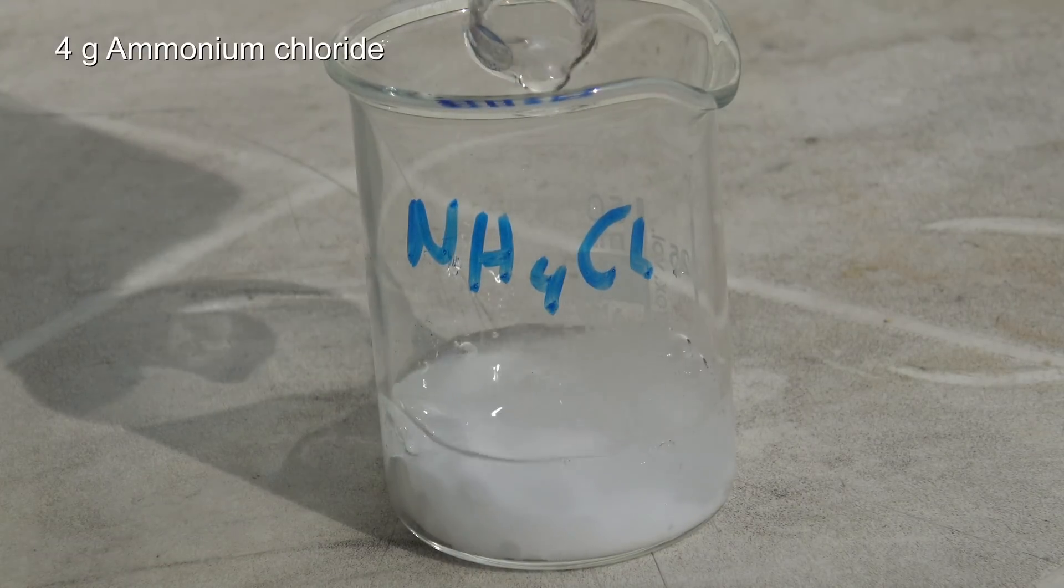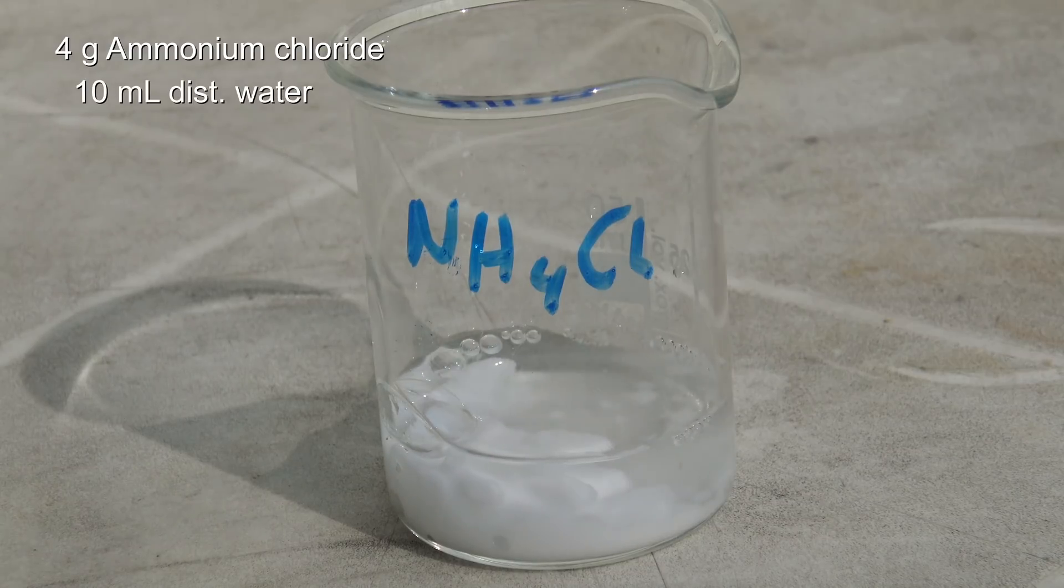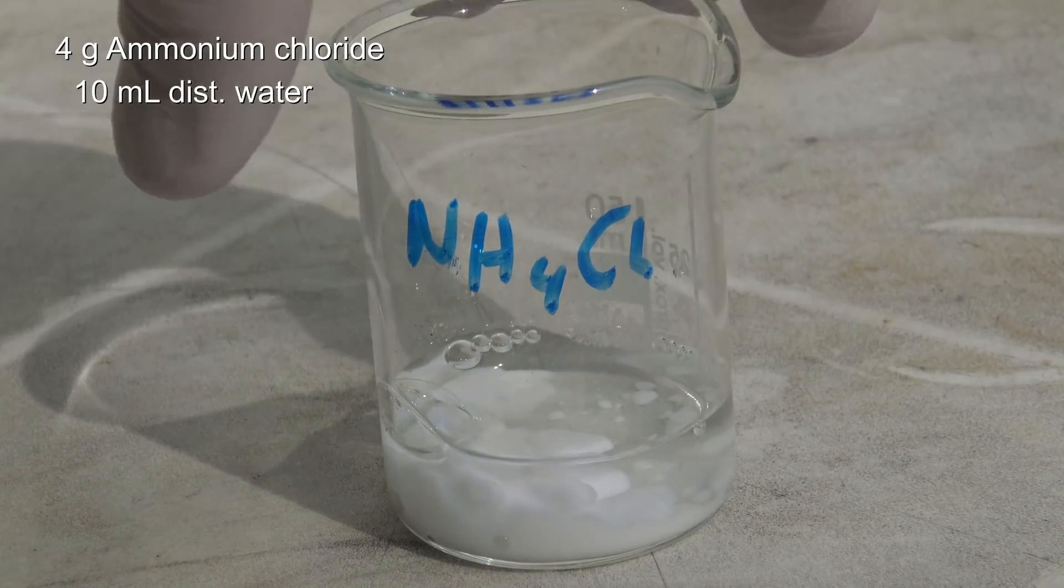At first, 4 grams of ammonium chloride are mixed with 10 milliliters of distilled water to prepare a saturated solution.